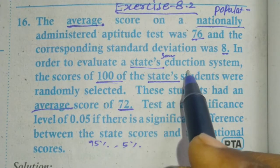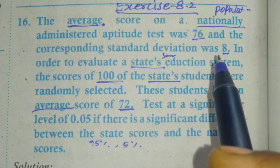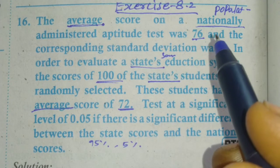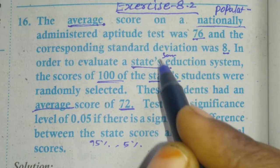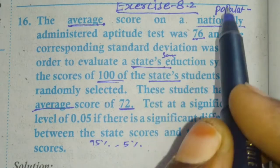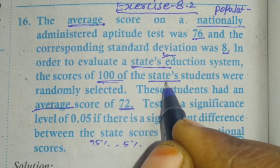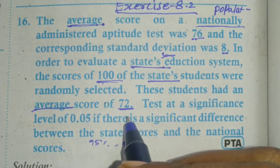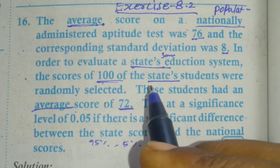To evaluate a state education system, a score of 100 state students were randomly selected. We have a sample and a population — the sample size n is 100. On the state level, these randomly selected students had an average score, so the sample mean x-bar is 72.